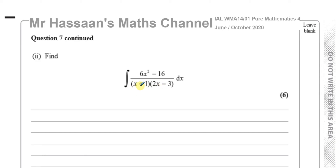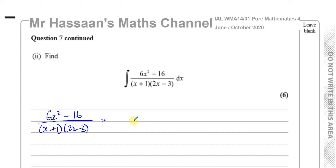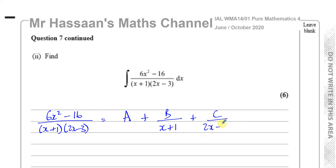If you expand it, you'll get x squared as your highest power. So if you have a quadratic over a quadratic with the same order, the difference between the orders is zero, so you'll have a whole number part which is a constant. So 6x² minus 16 over (x+1)(2x−3) will split as: A plus B over (x+1) plus C over (2x−3). If it were a proper fraction, you'd just have A over (x+1) plus B over (2x−3), but because it's improper you get a whole number constant part. It's very important to realize that.